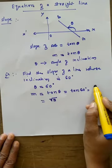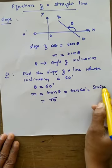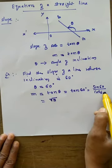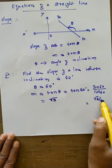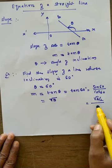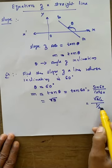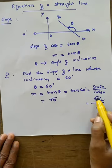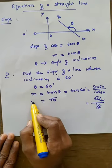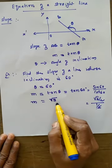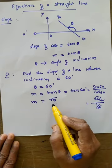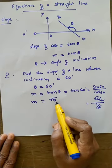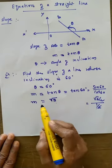We can verify: tan 60° = sin 60° divided by cos 60° = (√3/2) divided by (1/2) = √3/2 × 2/1 = √3. So M = √3 is the value of the slope.